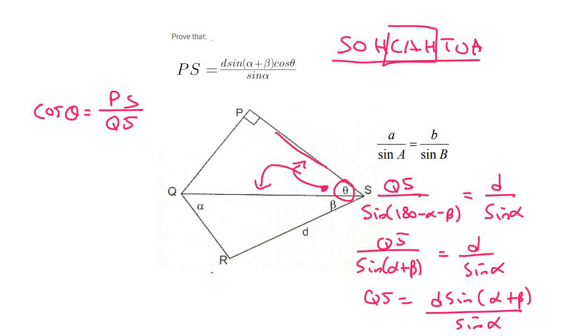And so if we were to rearrange this, we would find that PS should be equal to QS times by cos theta. Now we can plug QS in. So that's D sin alpha plus beta. And then there's a cos theta over here. And then that's all over sin alpha. And there's our answer guys.